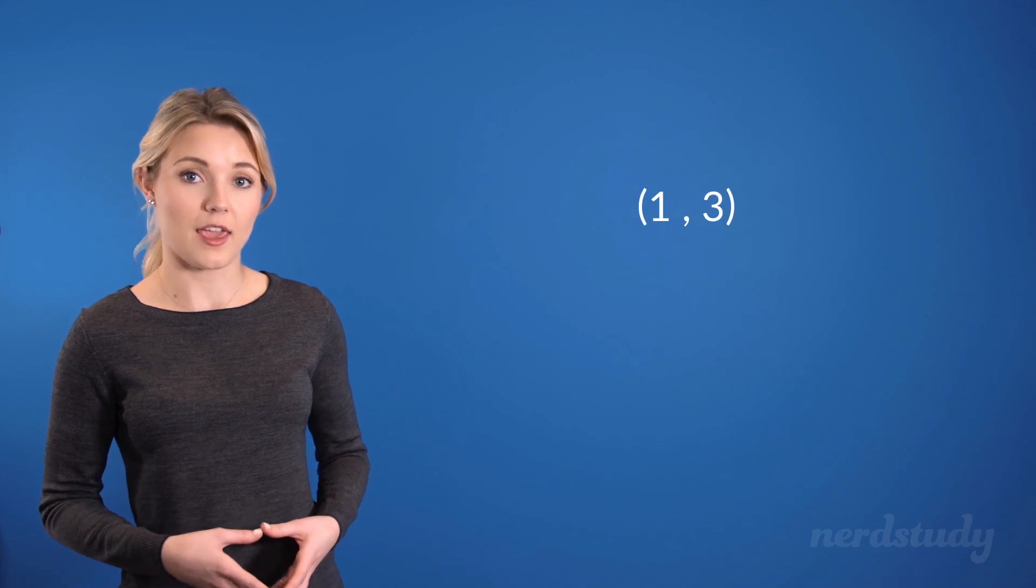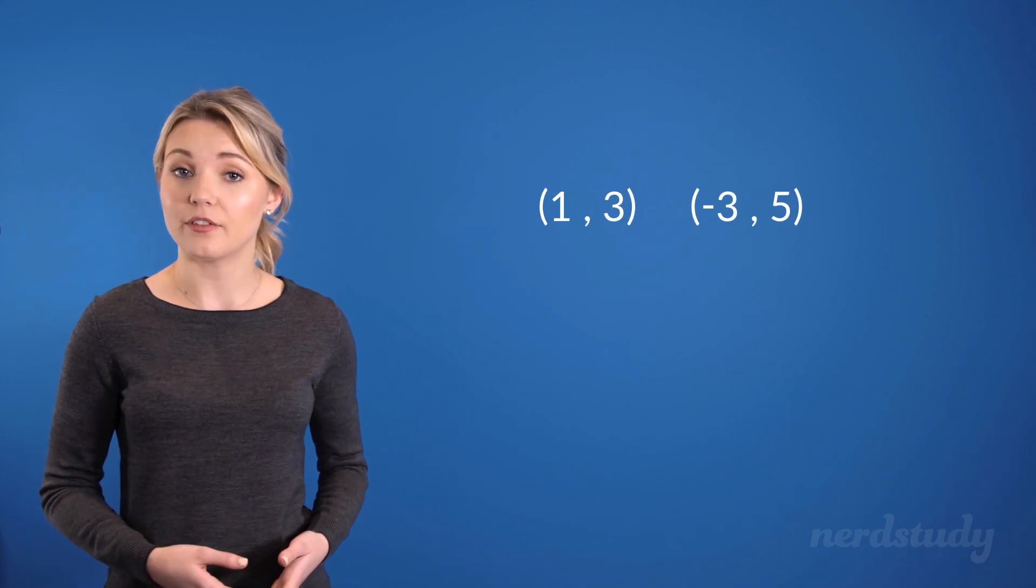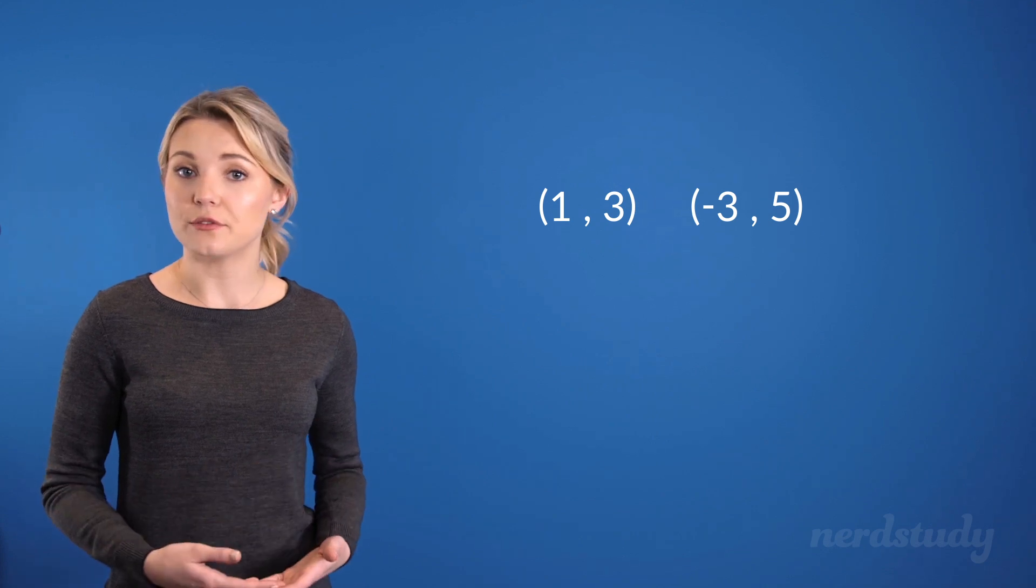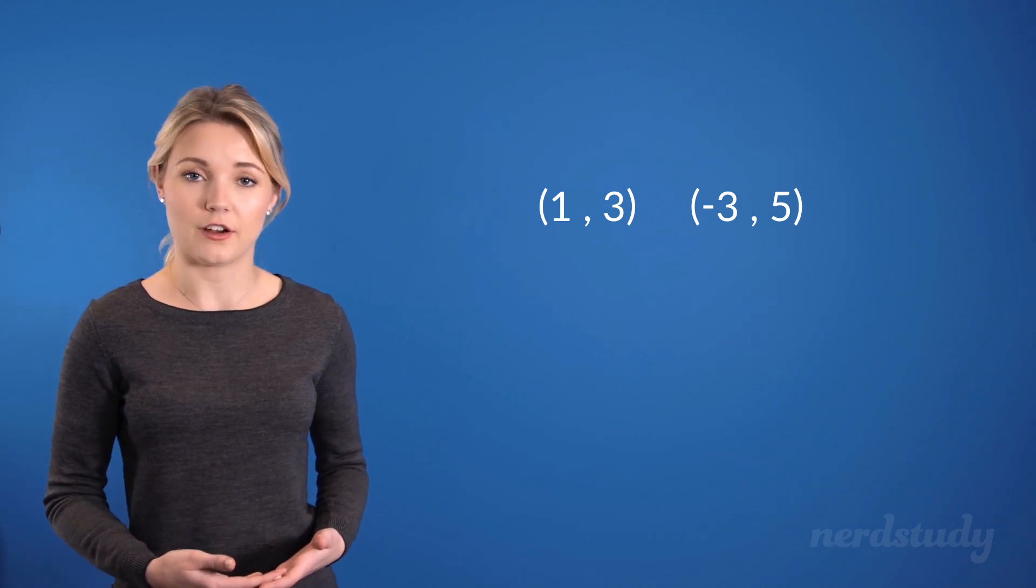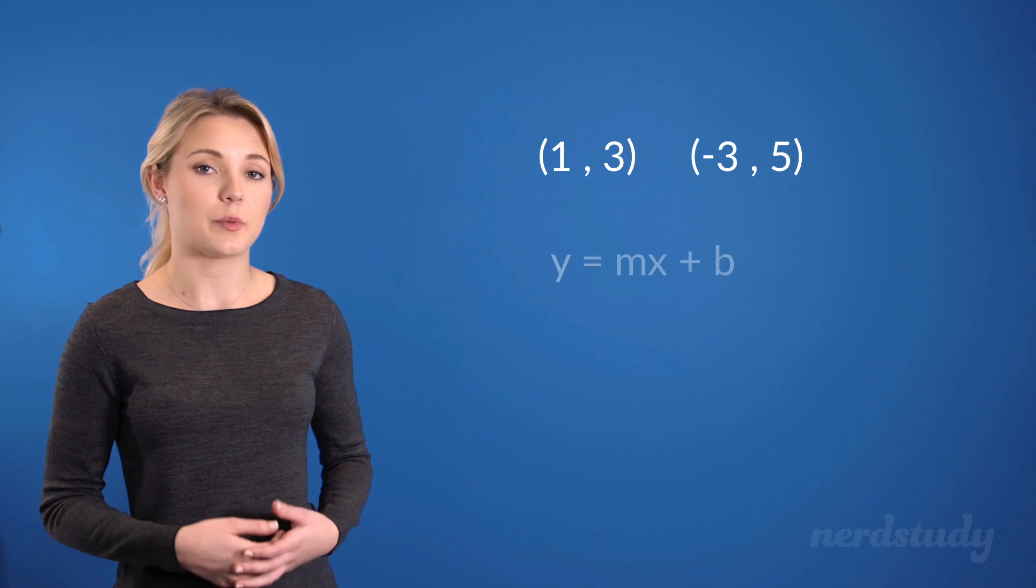The two points presented to us are (1, 3) and (-3, 5). And since we want to use the slope-intercept form of the linear equation this time, let's just bring that up.